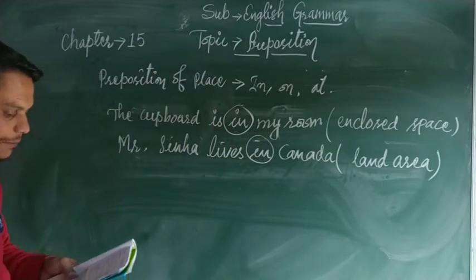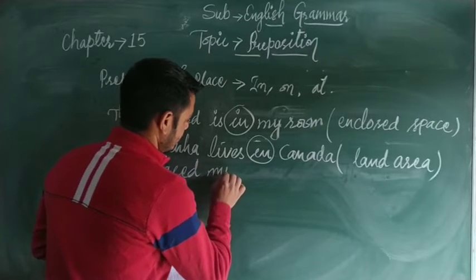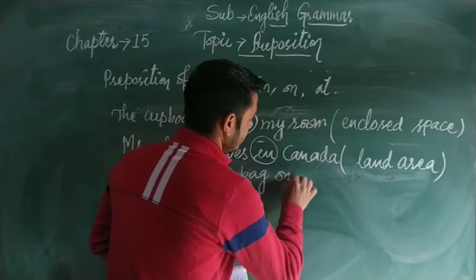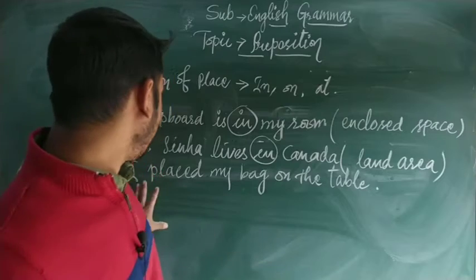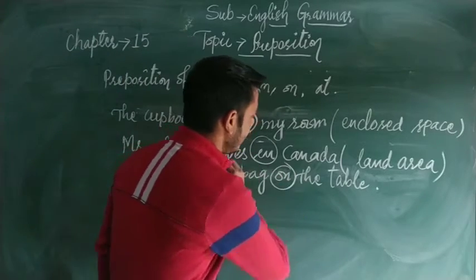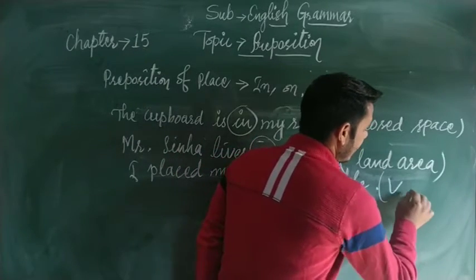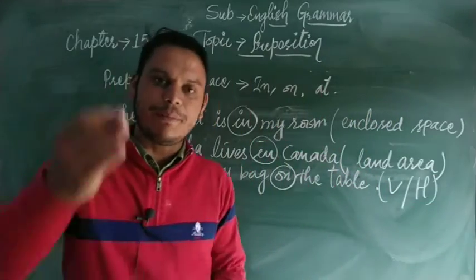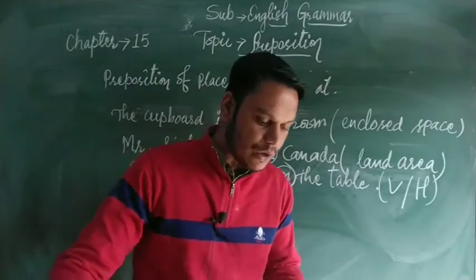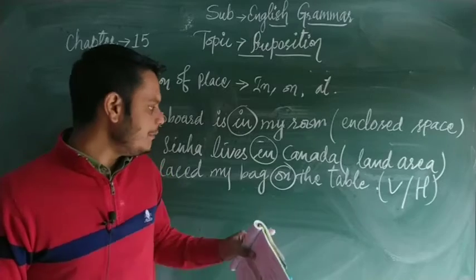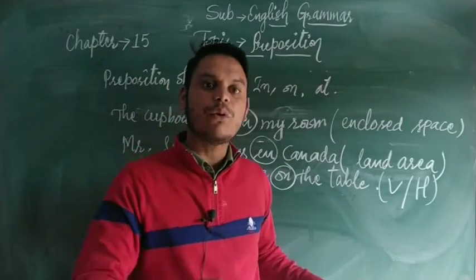Another example: 'I placed my bag on the table.' Here 'on' is used as a preposition of place. It indicates a surface — the bag is placed either vertically or horizontally on the table. The table is a surface, so 'on' is appropriate as a preposition of place.